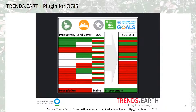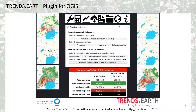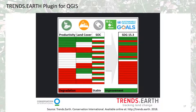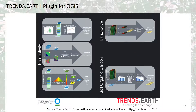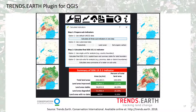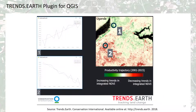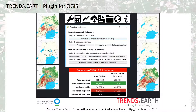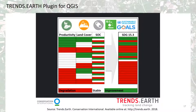Welcome back, students. In this video, I'm going to talk about the Trend Earth plugin for QGIS. Conservation International, in partnership with Lund University, NASA, and with the support of the Global Environmental Facility, produced a decision support tool to support Sustainable Development Goal 15.3.1 reporting, called Trend Earth. Trend Earth operates as a free plugin to the open-source QGIS software.